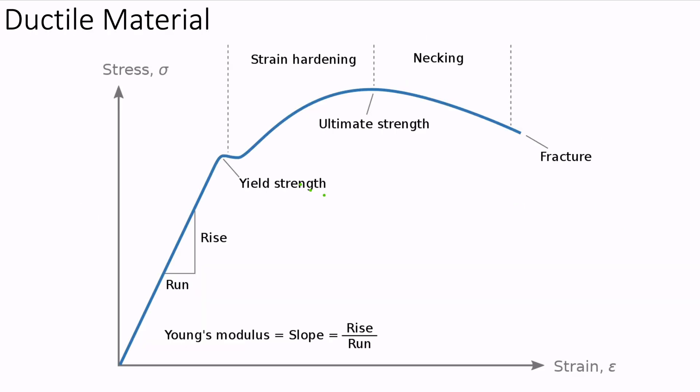This stress strain diagram represents a typical ductile material, where stress and strain are proportional to each other up to the yield point. Further increase in stress leads to yielding of the material and it reaches its maximum stress value or ultimate stress. Further increase of stress will lead to an abrupt change in strain and eventually the material will fracture.